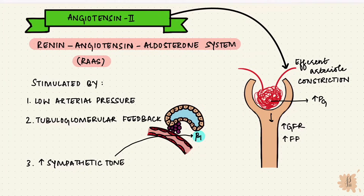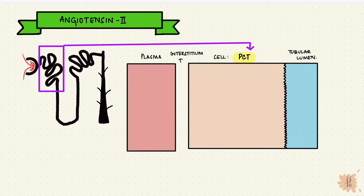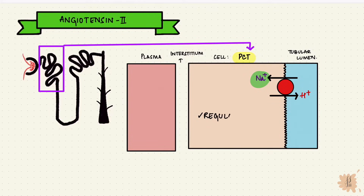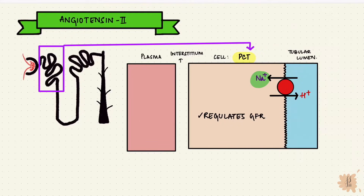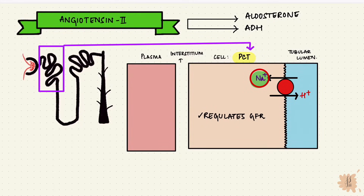Despite the high volume of sodium being filtered, angiotensin II acts on the proximal tubule, stimulating the sodium-hydrogen exchanger. So it effectively increases sodium reabsorption and regulates the GFR and maintains blood volume — sodium is filtered but it's reabsorbed later. Indirectly, it also increases aldosterone and the antidiuretic hormone.